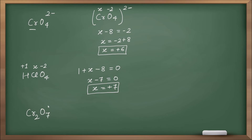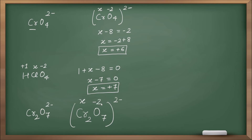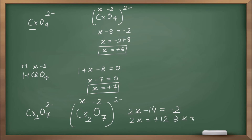Example: Cr2O7²⁻ — what is the oxidation number of chromium? Let chromium = x, oxygen = minus two. So: 2x + 7(−2) = −2, giving 2x − 14 = −2, 2x = minus two plus fourteen = plus twelve, therefore x = plus six.